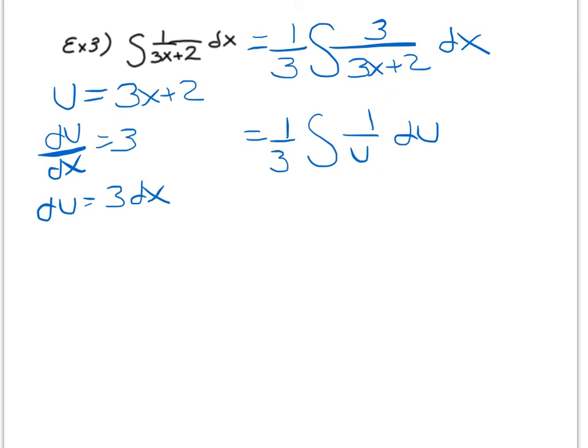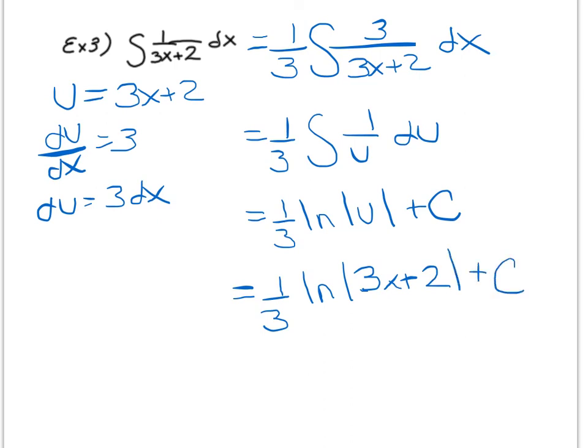Now again, I do not need to change that u to the negative 1 because I now know that the integral of 1 over u is just ln of u, giving me 1 third ln absolute value of u plus c, having a final answer of 1 third times the natural logarithm of the absolute value of 3x plus 2 plus my constant since it was an indefinite integral.